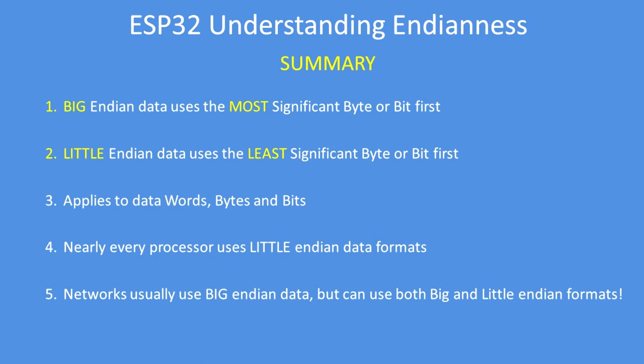In summary, Big Endian uses the most significant byte or bit first. Little Endian uses the least significant byte or bit first, and it applies to data words, bytes, or bits. Nearly every processor uses Little Endian data format, and networks almost exclusively use Big Endian data format — though they can also use both, so something to be aware of in your calculations.